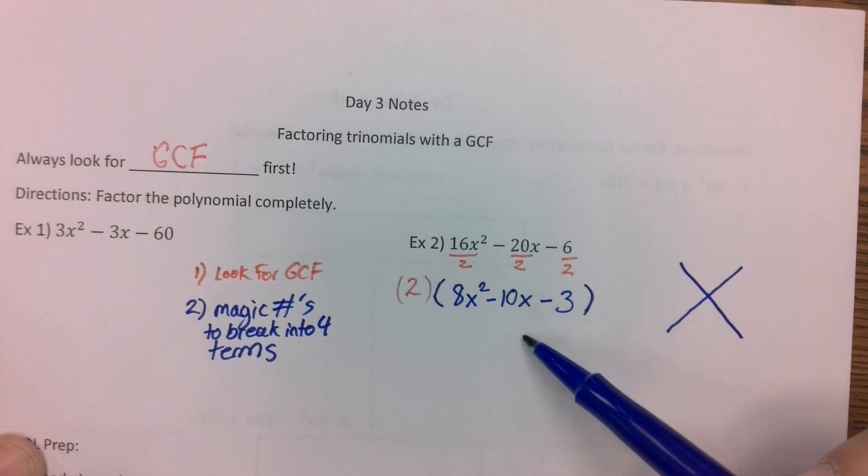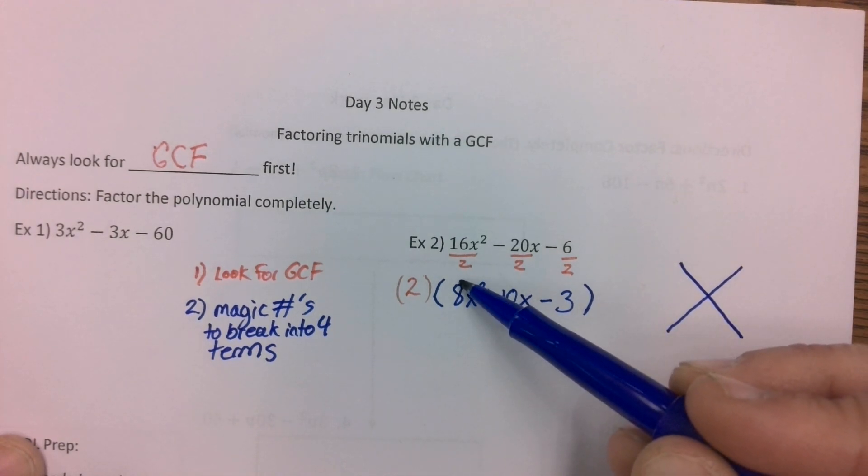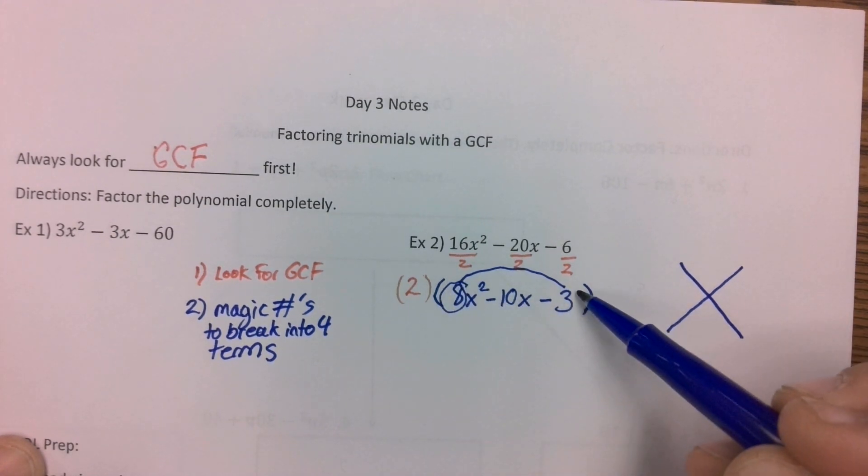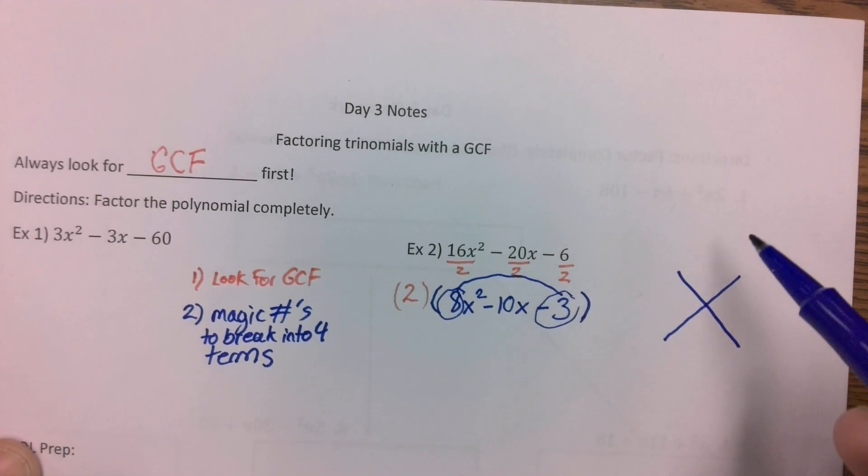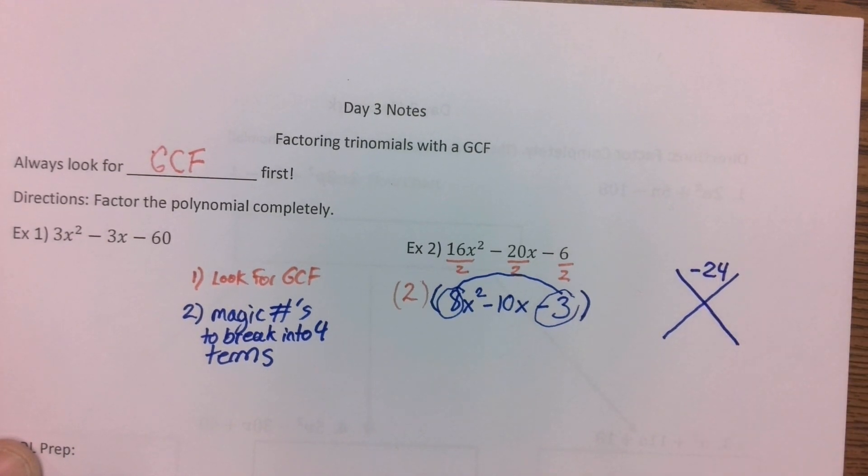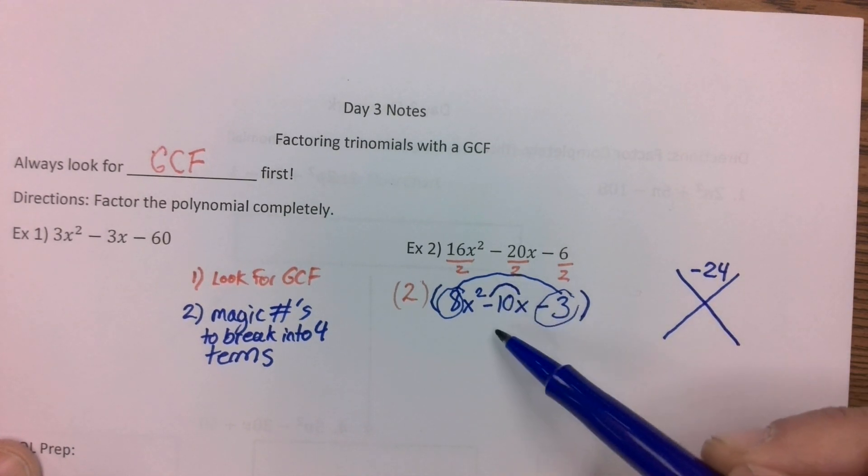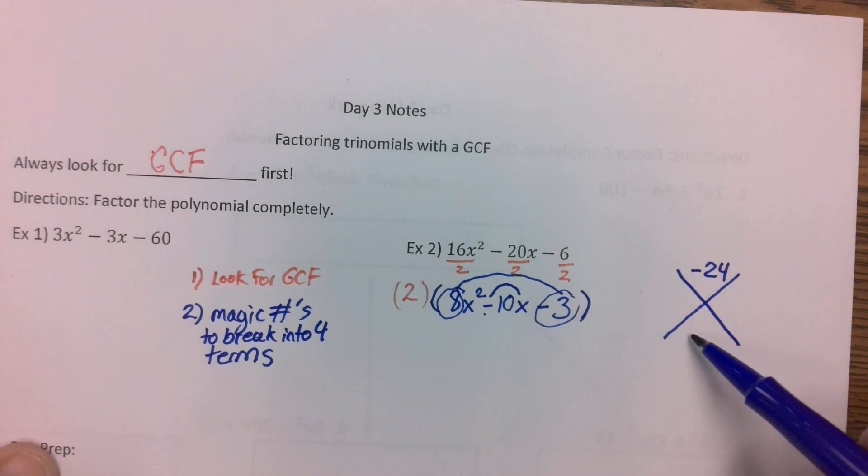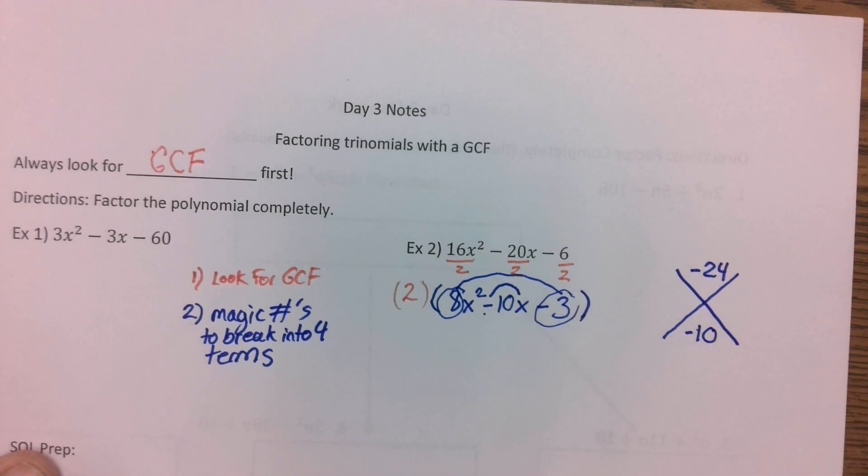We need to break this into 2 terms and we do that by making a little rainbow here. We take the 8 and we multiply it by a negative 3 and we get negative 24. So we need 2 numbers that multiply to negative 24. And then our middle number, if we don't multiply it, we don't do anything with it, we just take this negative 10. We have to add up to negative 10.